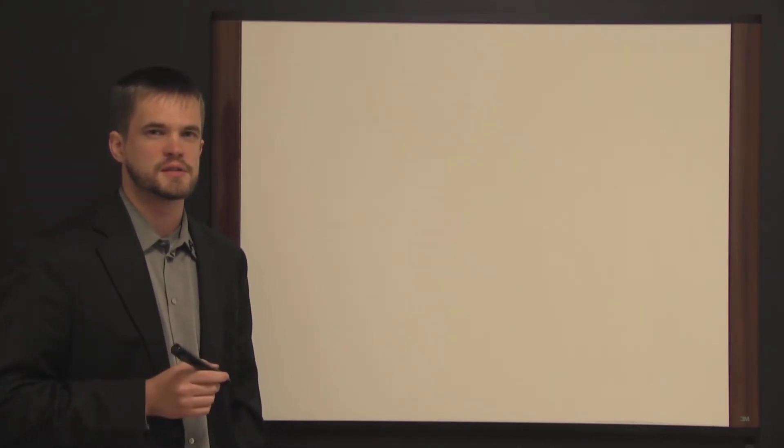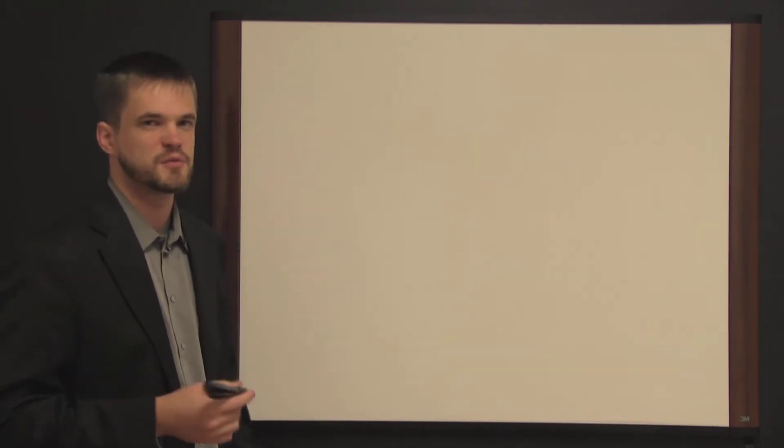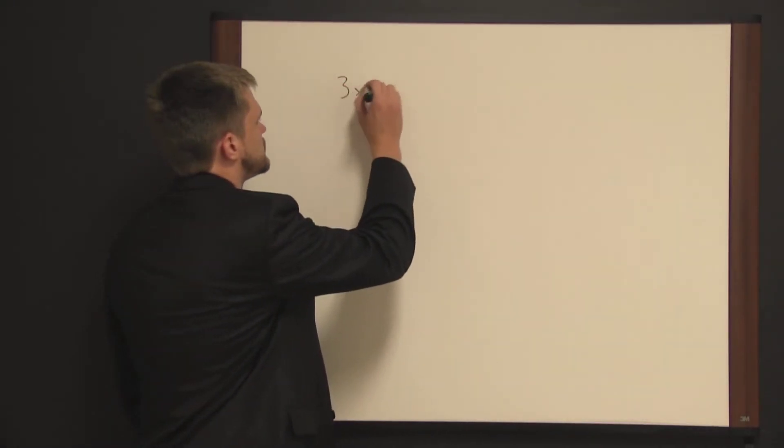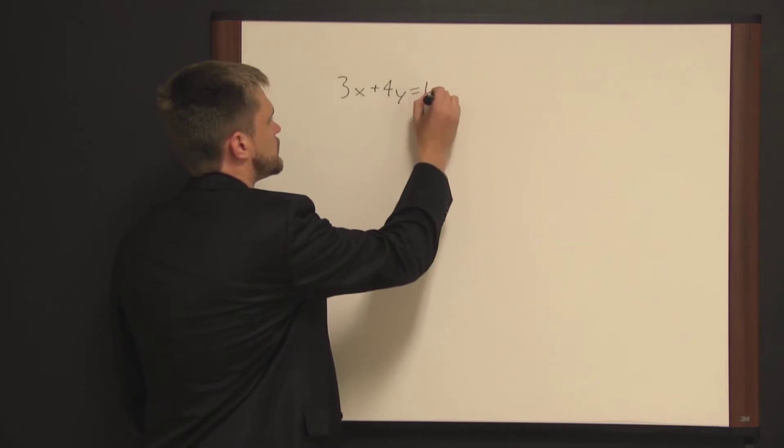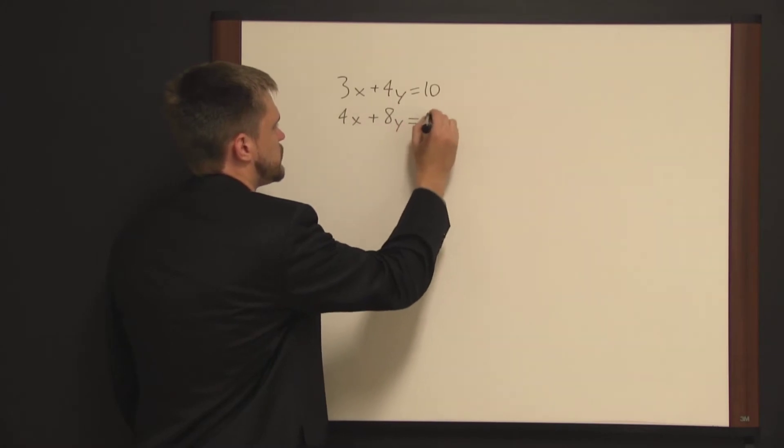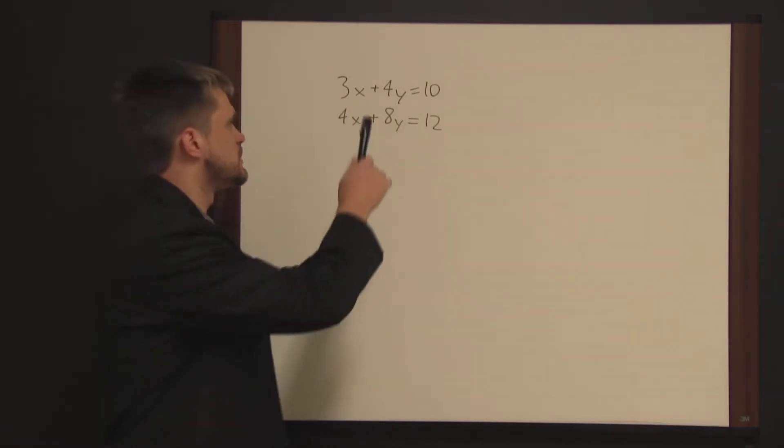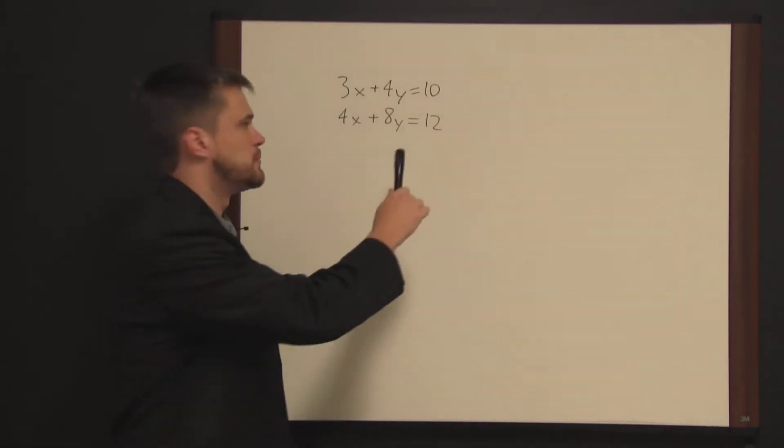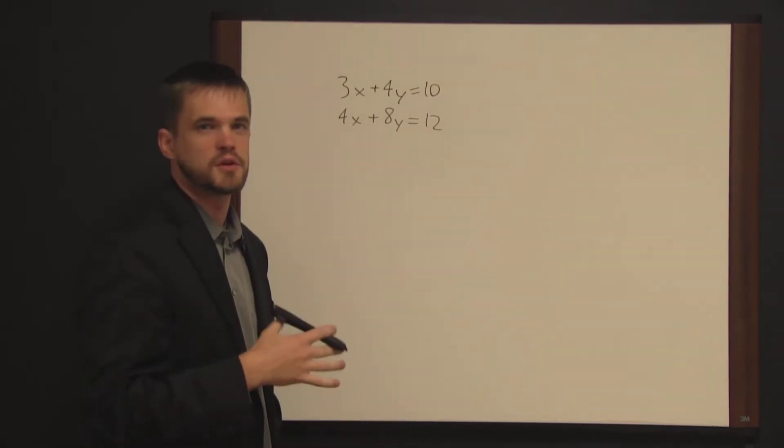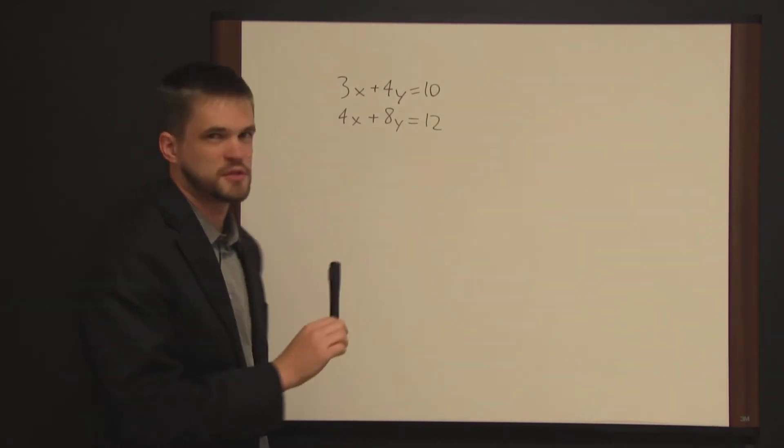A system of equations is a set or a group of equations where the variables in however many equations you have represent the same quantities in each equation. For instance, if we have the system of equations 3x plus 4y equals 10 and 4x plus 8y equals 12, we have x and y in both of these equations and this x and this x are the same and this y and this y are the same. You have essentially two pieces of information about these variables instead of one.